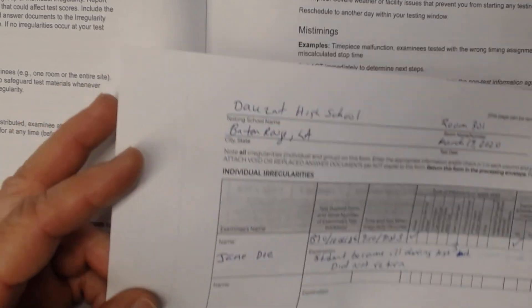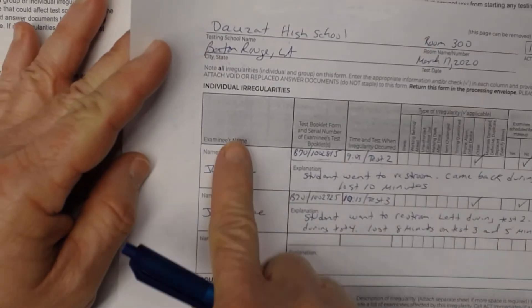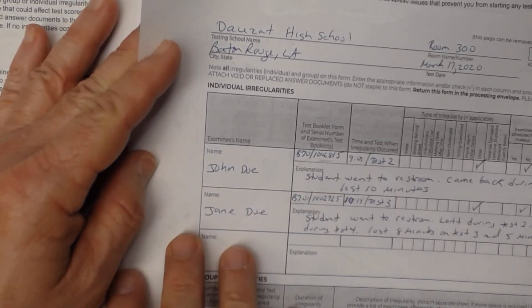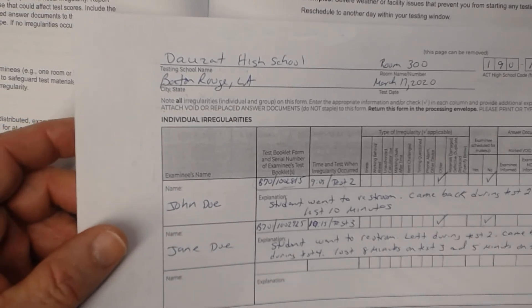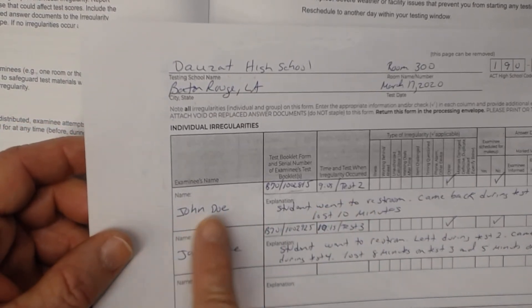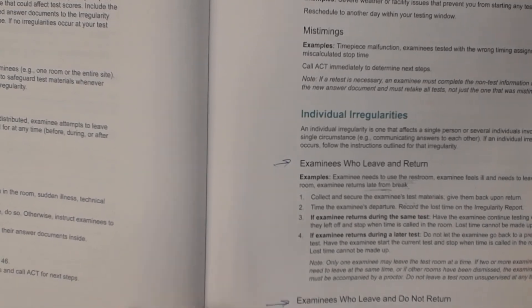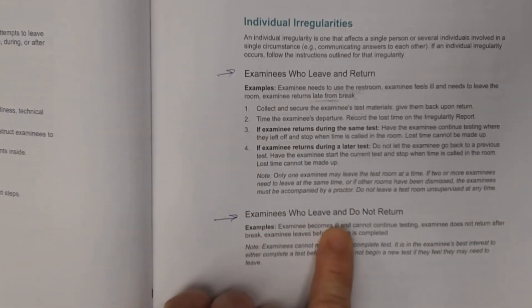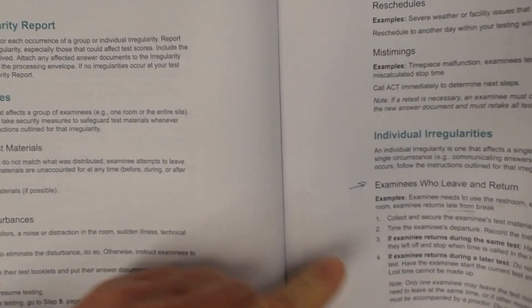For the restroom scenario where multiple students are listed, that irregularity report is not being attached to an answer document. Whenever you do an irregularity that needs to be attached to an answer document, only have one item listed on that report. That covers these two types of individual irregularities: examinees who leave and return, and examinees who leave and do not return. If you have any questions, discuss them with your test coordinator.